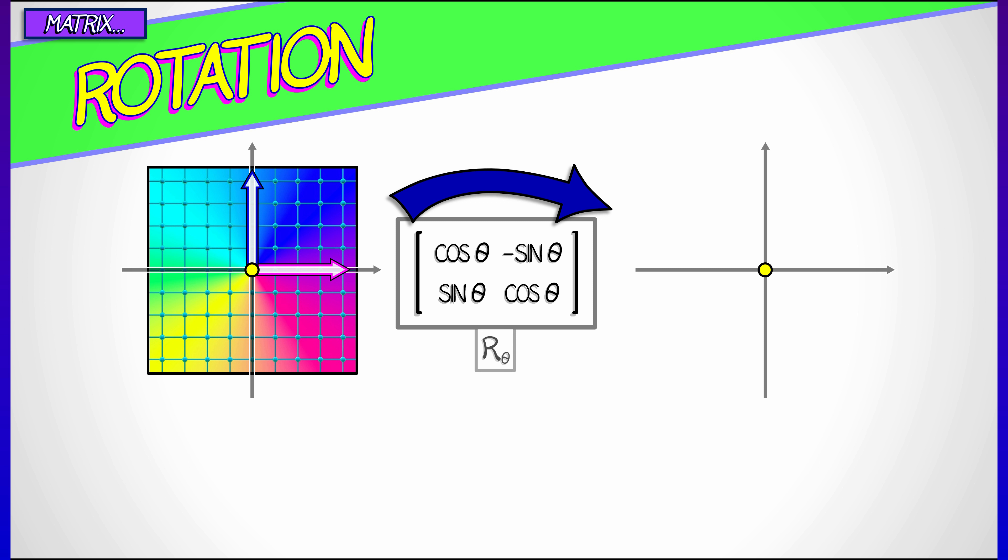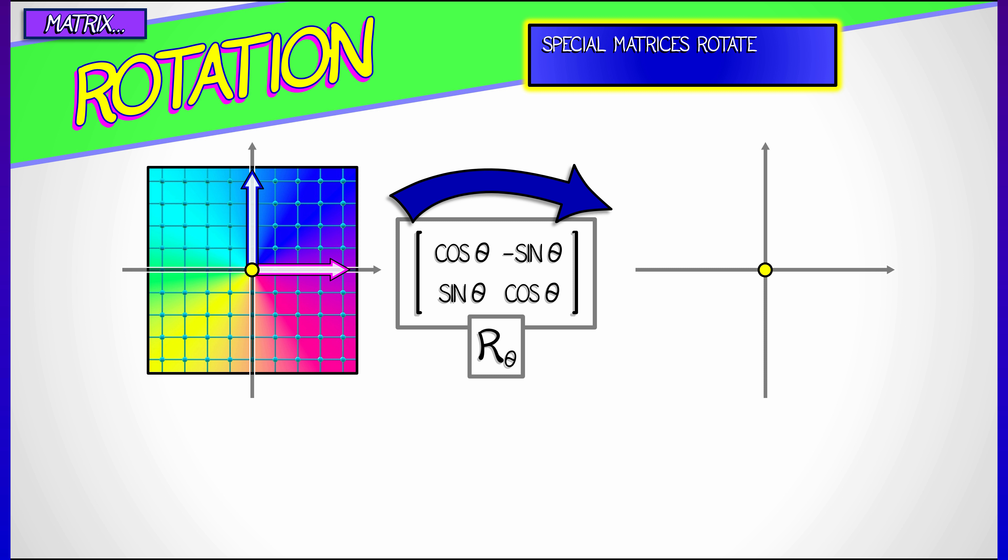These are the two-by-two rotation matrices. This has a special name. R-theta is the matrix with columns, cosine theta, sine theta, and minus sine theta, cosine theta. Those columns are where the i and j vectors get sent.